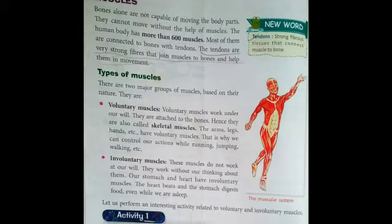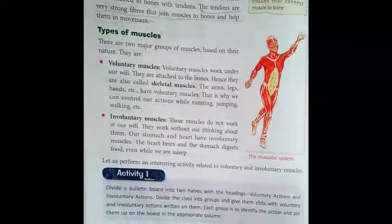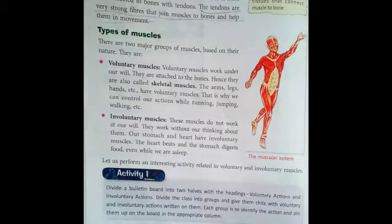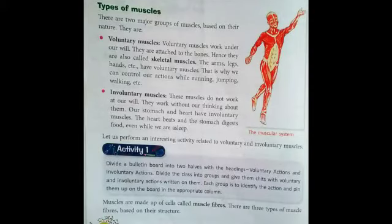Now let us learn about types of muscles. There are two major groups of muscles based on their nature. The first one is voluntary muscles and the second is involuntary muscles.